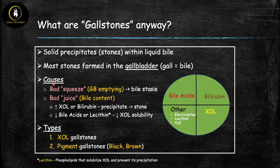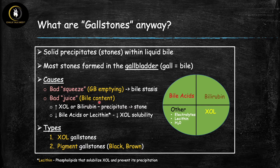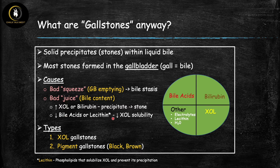The causes of gallstones can be divided broadly into two categories. First is what I call the 'bad squeeze' problem — a problem with gallbladder contraction that leads to bile stasis, which forms sludge and stones. Second is the 'bad juice' problem — gallbladder contraction is fine, but the bile content itself has too much cholesterol or too much bilirubin. Conversely, if bile acids or lecithin are too low, you're also at increased risk of developing gallstones.